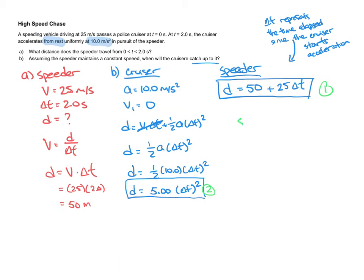Because both equations give me d, a position, and I want the positions to be equal. So I set them equal to each other. So that's going to result in this overall equation of 50 plus 25 delta t equals 5 delta t squared.